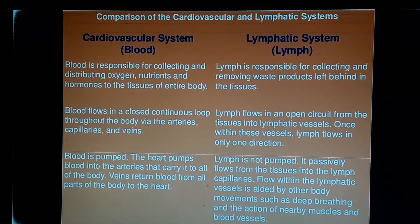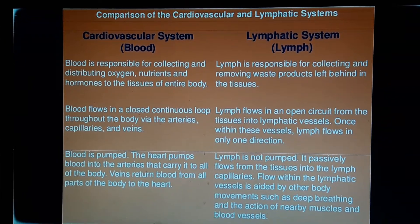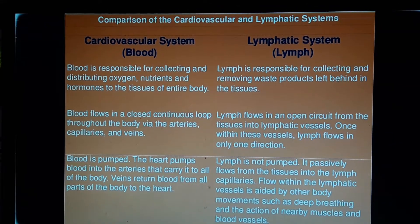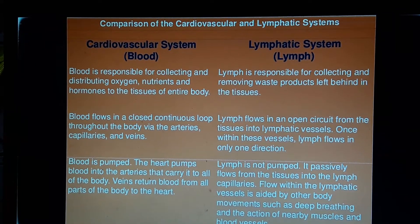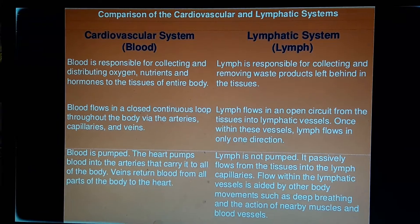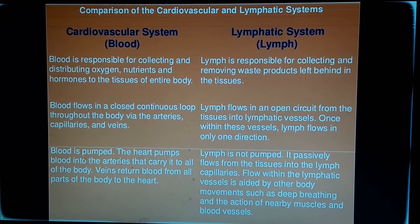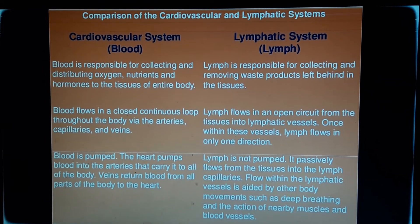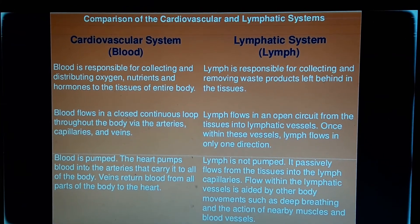Here I have shown a comparison between blood, associated with the cardiovascular system, and lymph, associated with the lymphatic system, in order to understand the difference in functioning of both systems. With this, we come to an end of circulation in humans. In my next video, we will learn about the last part of transportation — that is, transportation in plants.